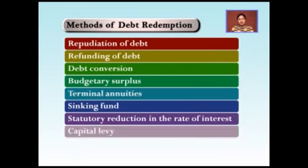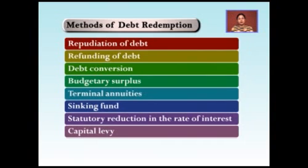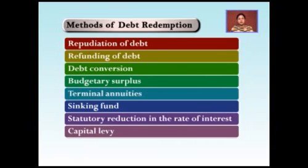Next is capital levy, a method in which the government imposes a heavy tax on property and wealth. It is imposed on rich individuals only, on a progressive scale — similar to progressive taxation where more income means more tax. Here, more property and more wealth means more tax. This method is very quick and equitable because debt is repaid according to the ability of the taxpayers.